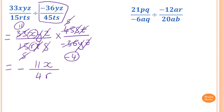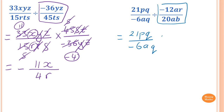First, flip the second fraction to make it multiplication. So it equals 21pq over negative 6iq times 20ib over negative 12ir. There are two negatives, so the answer is positive.